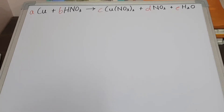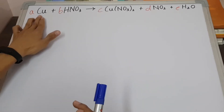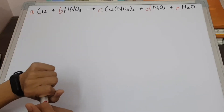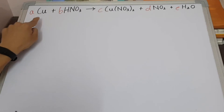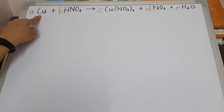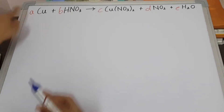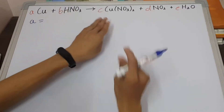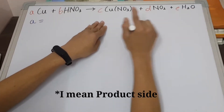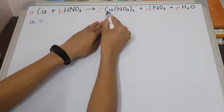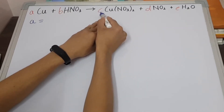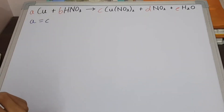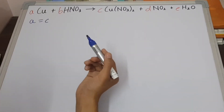So how can we do this? Let's take copper first. We have copper, Cu. On the reactant side, how many copper do we have? One, and what is the coefficient? A. So we have A here, and that equals to — on the product side — only 1 copper, and what is the coefficient? C. So A equals C.